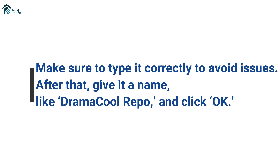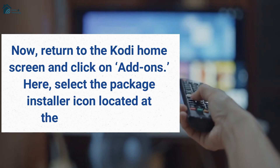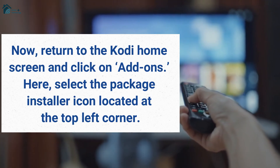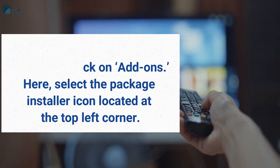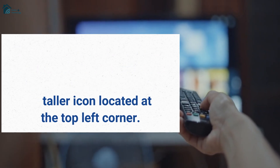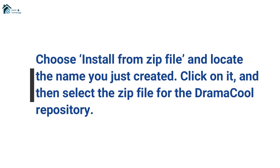After that, give it a name, like Dramacool Repo, and click OK. Now, return to the Kodi home screen and click on Add-ons. Here, select the Package Installer icon located at the top left corner. Choose Install from Zip File and locate the name you just created.